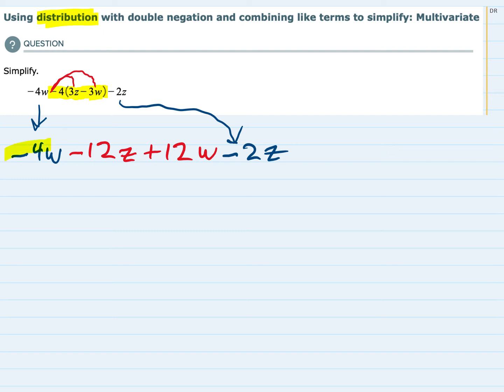Looking at the W's, I see I have a minus 4W and a plus 12W. Those are like terms in that they both have just one W, so I can add or subtract them as needed.